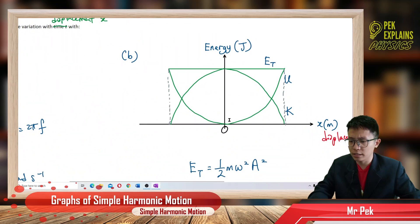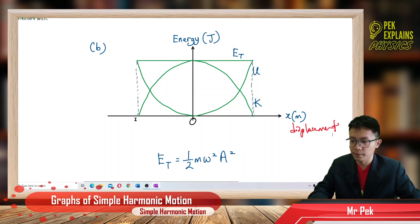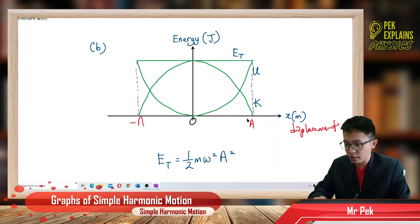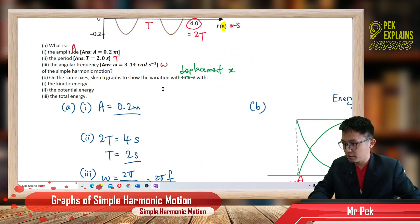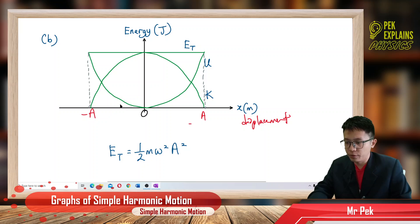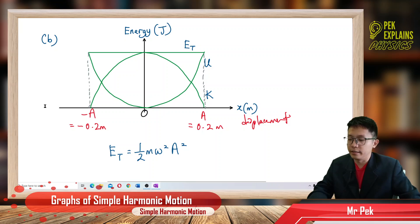The elastic potential energy is maximum at the amplitude. Kinetic energy is maximum at the equilibrium position but zero at the amplitude. The maximum displacement is A, and the other side is negative A. Since our amplitude is 0.2 meters, we label 0.2 meters on one side and negative 0.2 meters on the other.